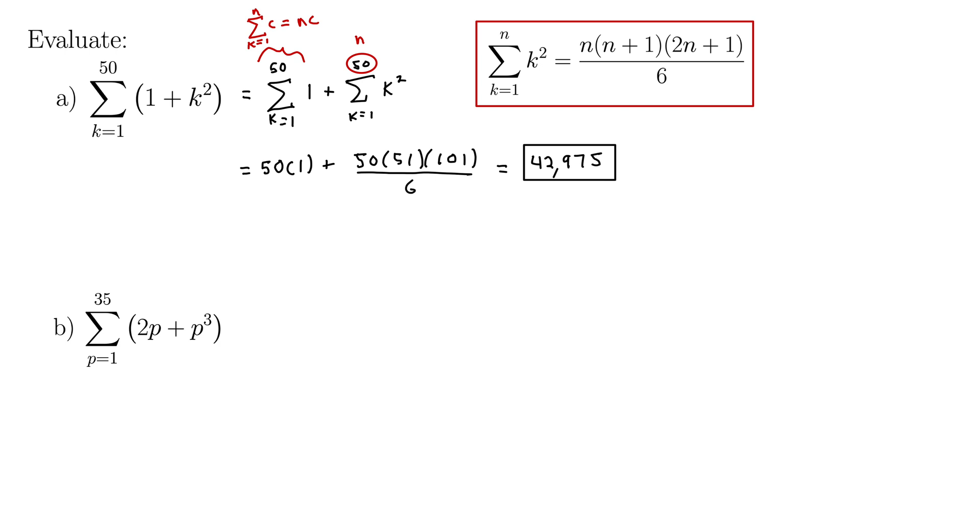Why don't you try part B on your own. We have the sum as p goes from 1 to 35 of the quantity 2p plus p cubed. So pause the video, use the formulas for p and p cubed, and see if you can get that to come out to a single number. It will be a large number.